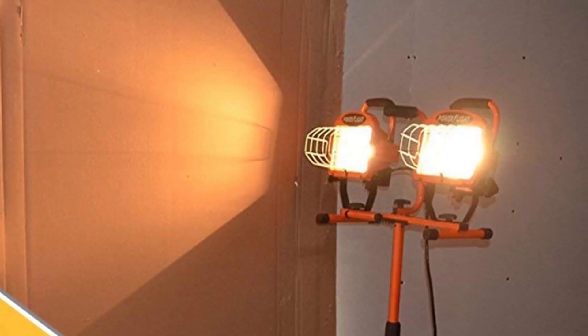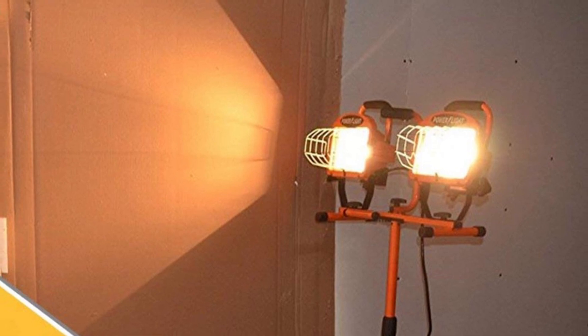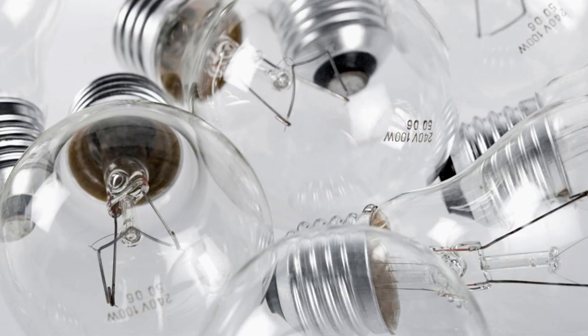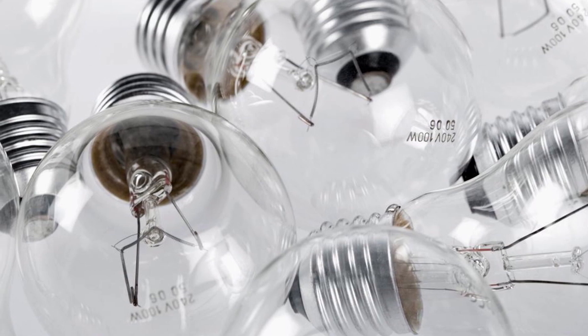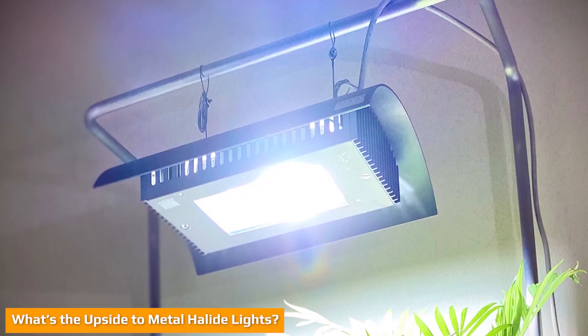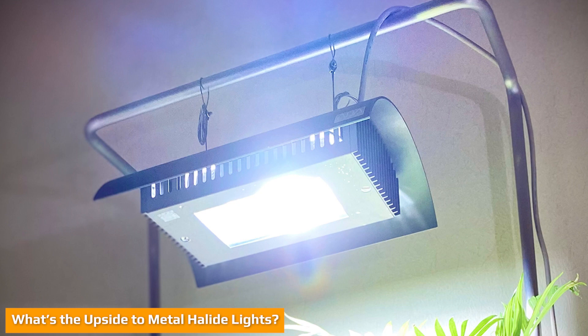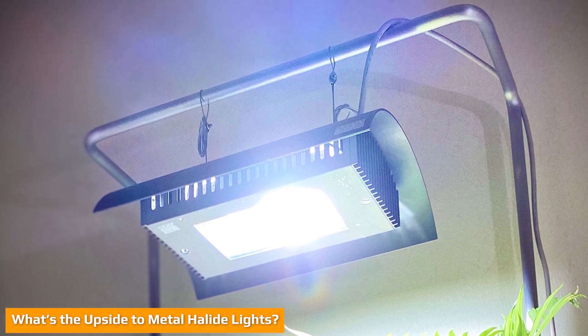They function very similarly to other gas-discharge lamps, the principal difference being the composition of the gas. The introduction of metal halide vapor generally improves both the efficiency and the quality of the light. Metal halide lights are three to five times as efficient as incandescent bulbs and produce a much higher quality light.